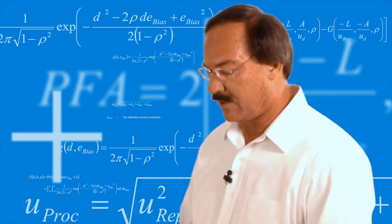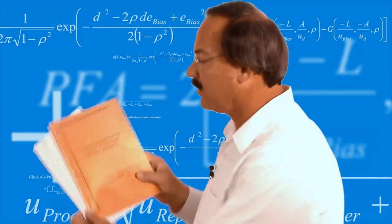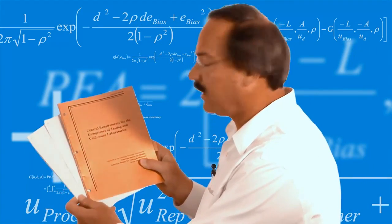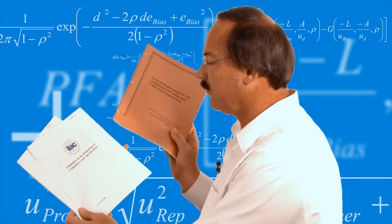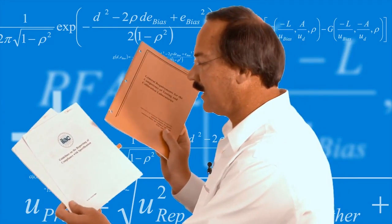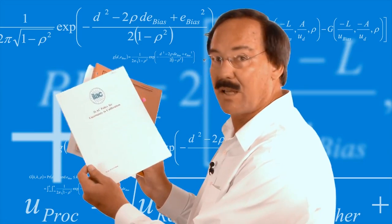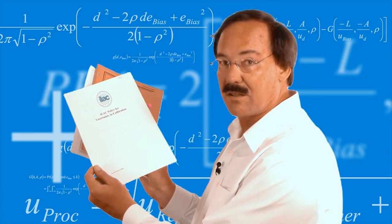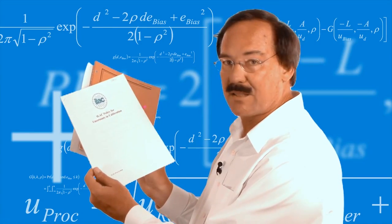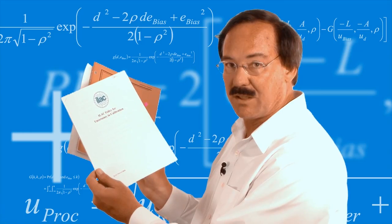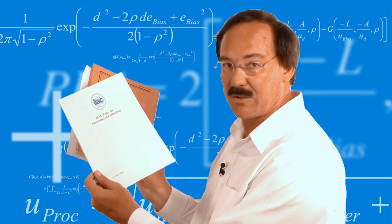In this module on standards compliance, we're going to be looking at some of the key calibration standards, starting with 17025, ILAC G8 — the guidelines on reporting which gives you further guidance on 17025 — and several others, most notably ILAC P14, which came out just in 2010 and has some important guidelines for those who need accredited calibrations.